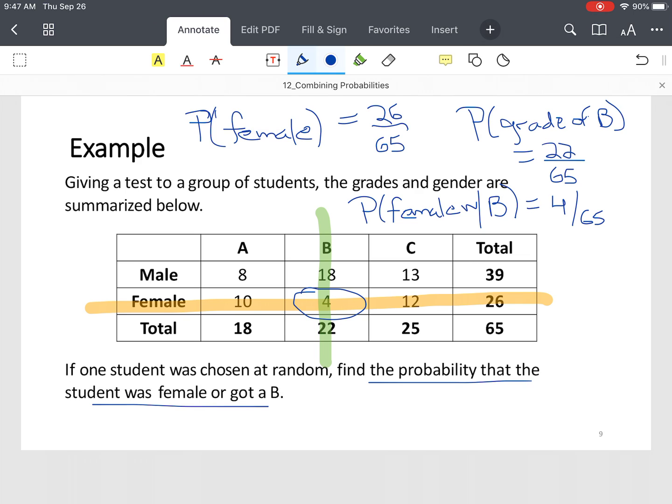So now to answer this probability question, we add our 26 out of 65 plus 22 out of 65 minus 4 out of 65. So that's 48 minus 4, which is 44 out of 65. And again, that's the simplest form.